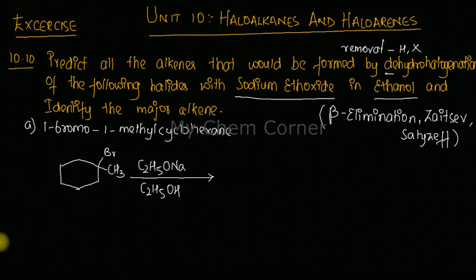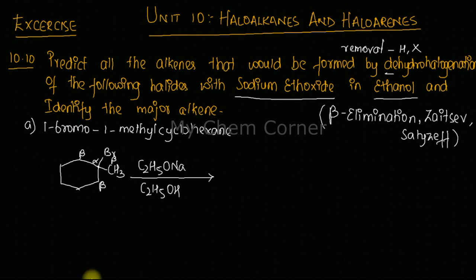In beta elimination, the halogen is bonded to a carbon called the alpha carbon. Next to this alpha carbon, whatever carbons you have are beta carbons. Attached to this point you have a beta carbon here, another beta carbon here, and another one here. So in this compound I have three beta carbons, which means I can get different products.